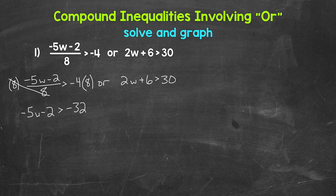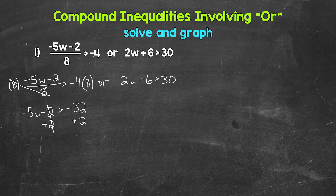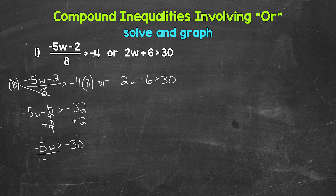Negative 4 times 8 gives us negative 32. Now we have negative 5w minus 2 is greater than negative 32. We have multiplication and subtraction, so we need to undo the subtraction next. The inverse operation is addition. So add 2 to both sides. The 2s on the left cancel each other out, so we have negative 5w is greater than negative 32 plus 2, which gives us negative 30. Now we need to undo the multiplication — the inverse operation is division. So divide both sides by negative 5.